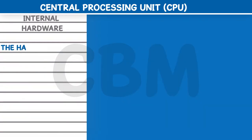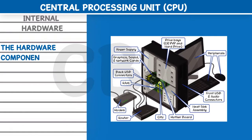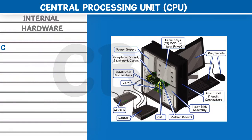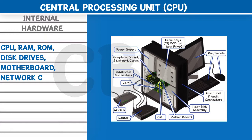Internal hardware: the hardware components that are installed inside the CPU are called internal hardware. Examples include: CPU, RAM, ROM, disk drives, motherboard, network card, sound card, video card, etc.